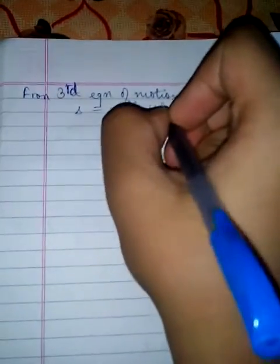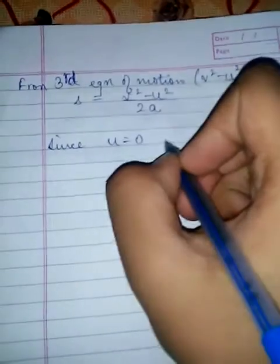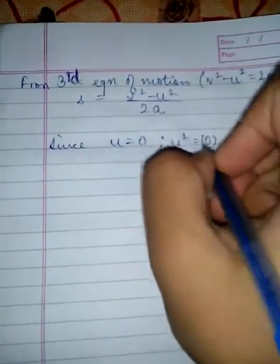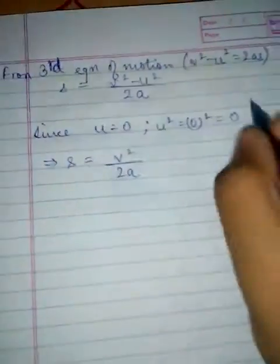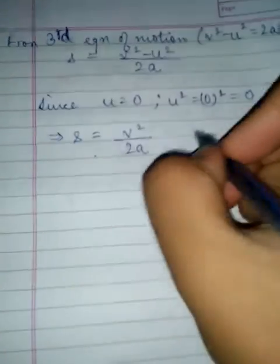Now we have the third equation of motion. From third equation of motion, V² - U² = 2AS, we have that S = (V² - U²)/2A. Since U = 0, U² = 0, that implies that S = V²/2A. This being the third equation.